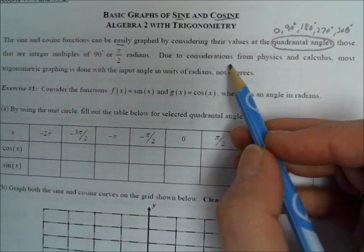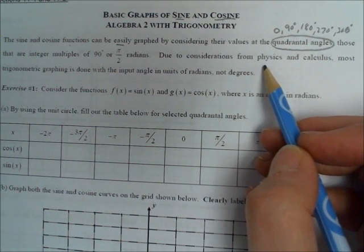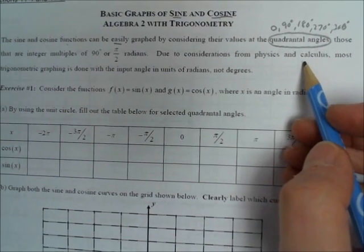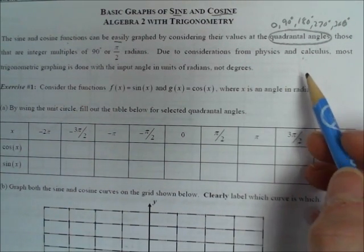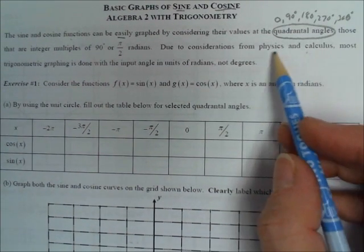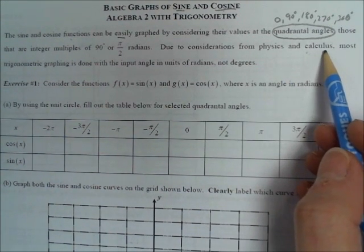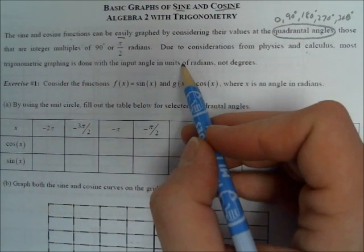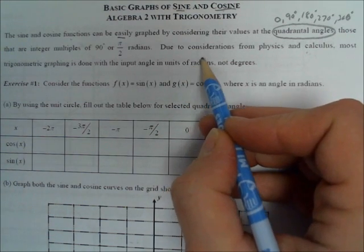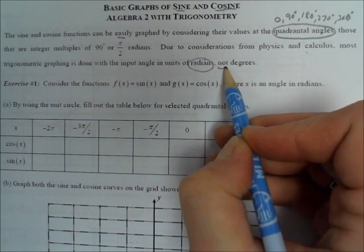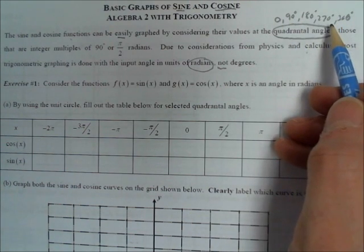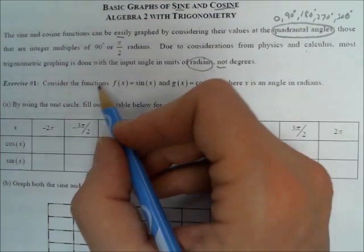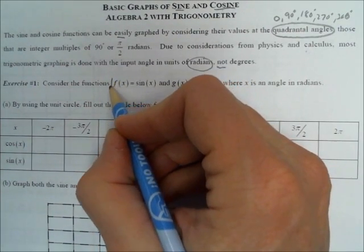Trigonometry is very useful in other areas of science like physics, and it's also very important in calculus. Most of the trig graphing done in those upper-level subjects uses angles in radians, not degrees. So we're going to be talking about all of these angles in radians when we do our graphing.